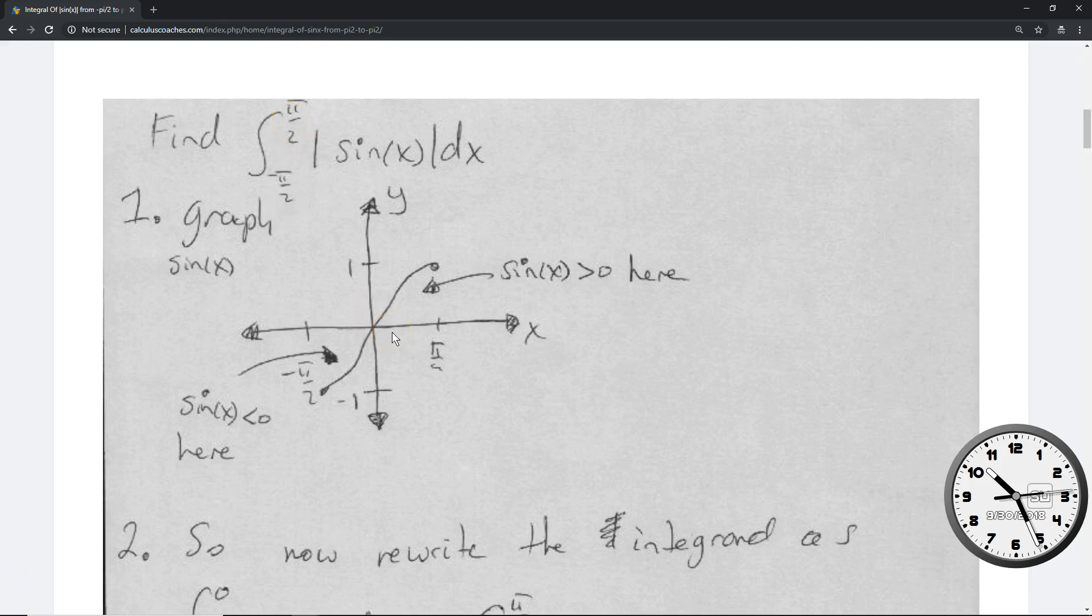Look at the graph of the sine function without the absolute value bars. You see that, for example, from negative pi over 2 up to 0, the sine function is less than 0, it's negative. And then from 0 to pi over 2, the sine function is greater than 0 positive.